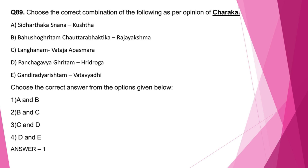Question number 89. A: Siddharthaka Snanam in Kushta Chikitsa — correct. B: Bahumamsharada cha Uttarabhaktigam for Rajayakshma Chikitsa — correct. C: Langhana for Vataja Apasmara — wrong, since for Vataja Apasmara, Vasti is the line of treatment. D: Panchagavya Ghrita for Hridroga — wrong, as Panchagavya Ghrita is mentioned under the context of Apasmara Chikitsa. E: Gandhiradhyarishtam for Vatavyadhi — wrong, since Gandhiradhyarishtam is used for Shvayathu Chikitsa. So the correct answer is option 1; A and B are correct.